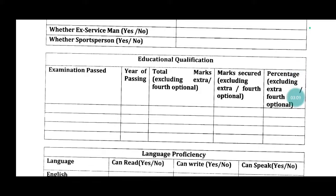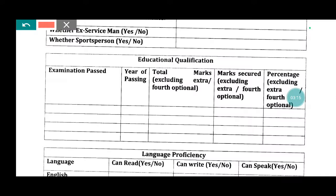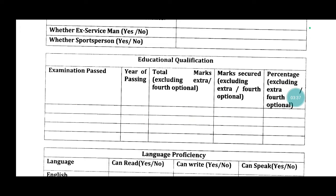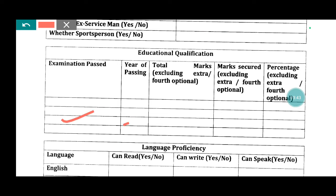Educational qualification is very important. We have to look first to see which one is relevant. We will see close to 10th — who the passing is, total marks, marks in each subject, and what the percentage is. We will see science marks for each subject. If you have a plus three, plus three or its equivalent, you have to fill in more details.